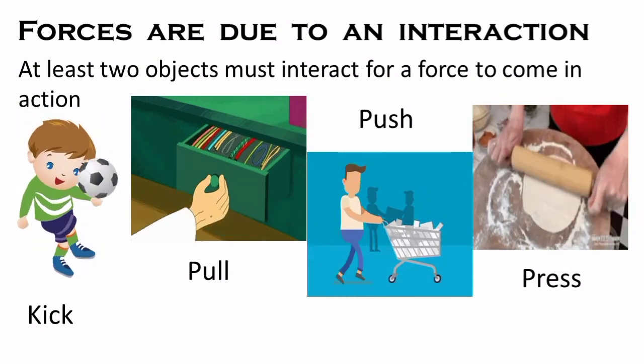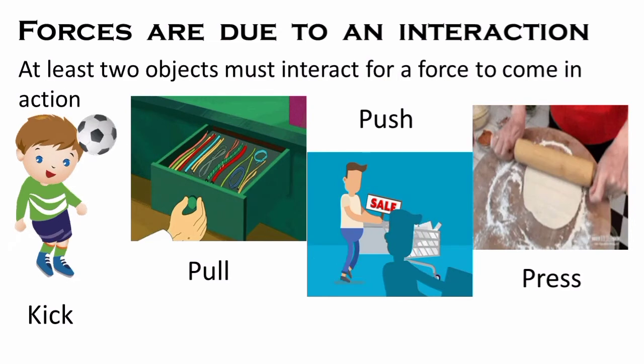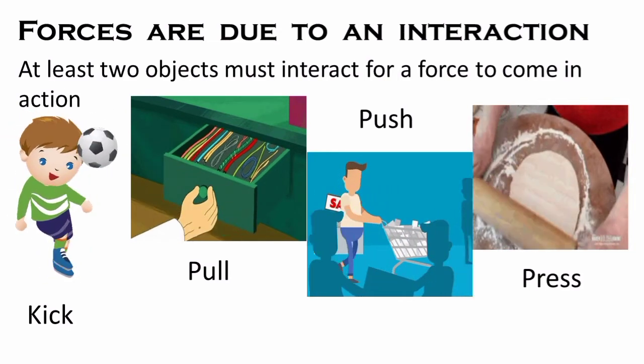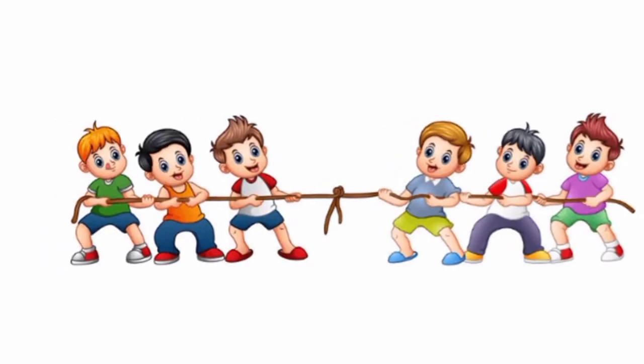As well as when you press the dough, your hands and the rolling pin, similarly the rolling pin and the dough are in interaction. There are many other examples to show that at least two objects must interact with each other.